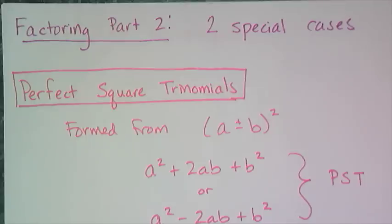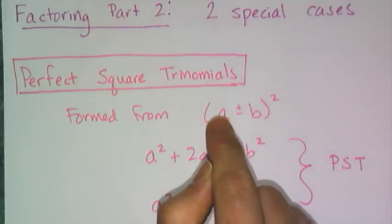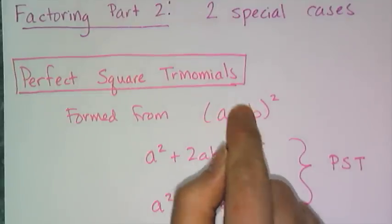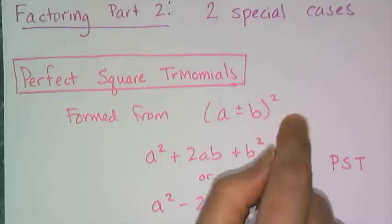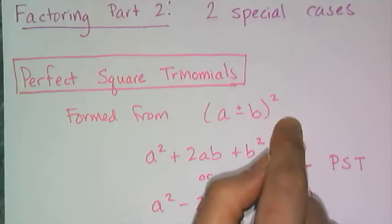In this factoring lesson, we're going to look at two specific special cases that have special names. The first should be familiar to you, and that is the perfect square trinomial, which is formed when you take a binomial a plus b or a minus b and multiply it out using FOIL.